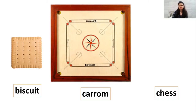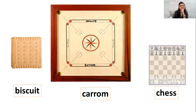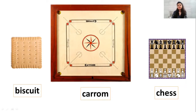Oh yes, this is also a game. Remember, it has black and white small, small boxes — small, small squares. Yes, that's right. That's chess. Chess board is also square in shape. And also the small, small squares are there in black and white color.